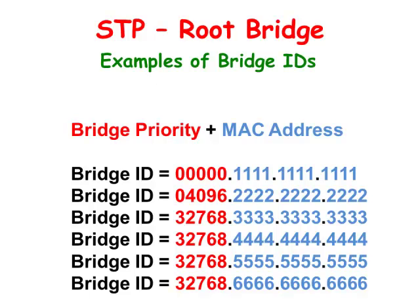The switch that has the lowest bridge priority will become the root bridge. But if more than one switch has the lowest priority number, then the switch with the lowest bridge priority followed by the lowest MAC address will become the root bridge.